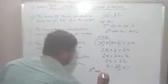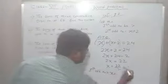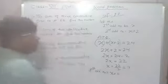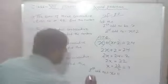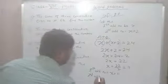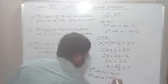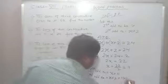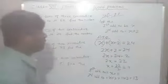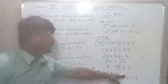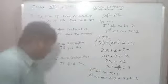The first odd number is x = 11, and the second odd number is x + 2 = 11 + 2 = 13. So the two consecutive odd numbers whose sum is 24 are 11 and 13.